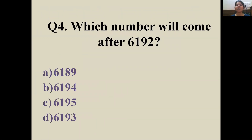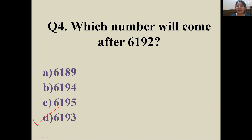Question number four: which number will come after 6192? The answer is D: 6193. I'm sure each one of you at home during the vacations is writing the counting up to 9999. Just keep practicing, kids — very good!